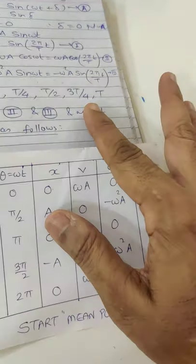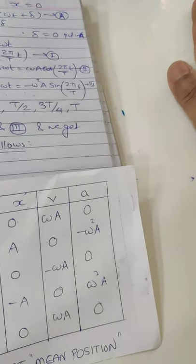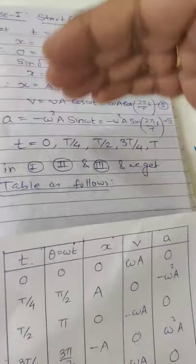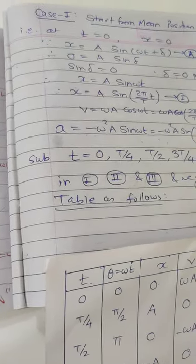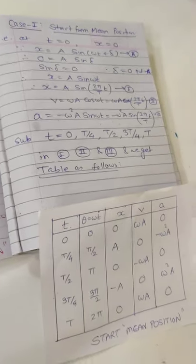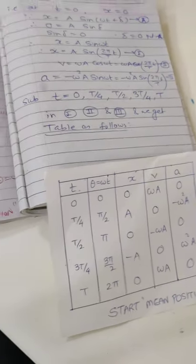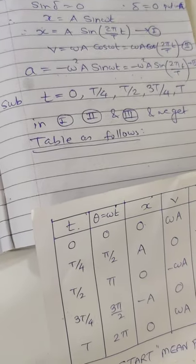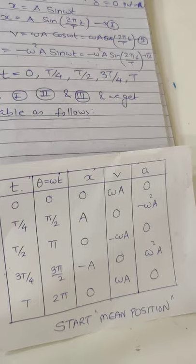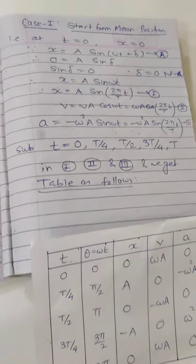But what we have done smartly is first of all we have drawn the graph, from the graph we have made the table, and then finally the equation. This is the way. When the examiner comes, he will first see this equation, then the table, and then the graph, so he will never understand what we have done first.